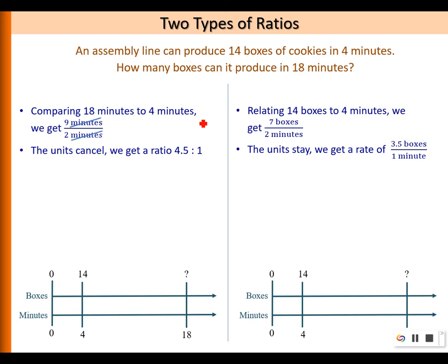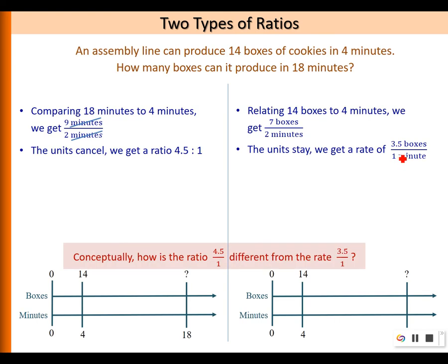For the second type, the unit stays. The reason is that boxes and minutes don't cancel — they are two different measurements. As a result, we get a rate of 3.5 boxes for every one minute, so we have to leave the units there.